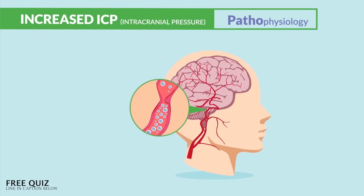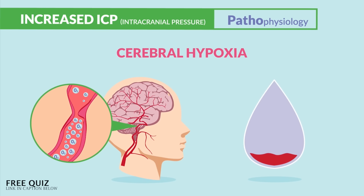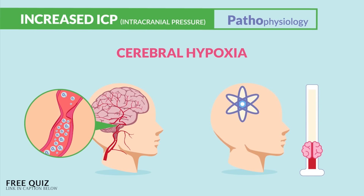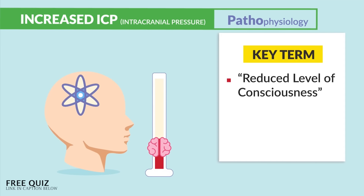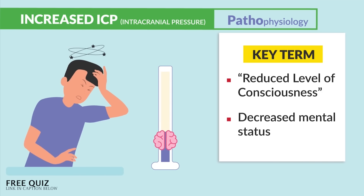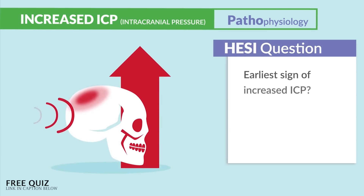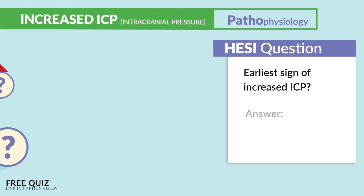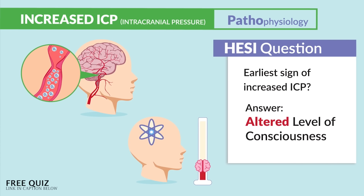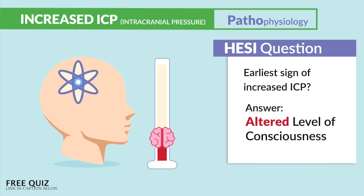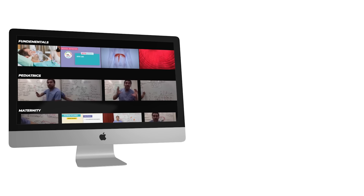As far as the pathophysiology, this increased pressure compresses the brain. Initially it compresses blood vessels that carry oxygen to the brain, so less blood means less oxygen, resulting in a change in level of consciousness from cerebral hypoxia — that low oxygen to the brain. The key term here is reduced level of consciousness or decreased mental status. This is the earliest sign of increased ICP. Just think: low oxygen means low consciousness, or mental status change, also known as altered level of consciousness.